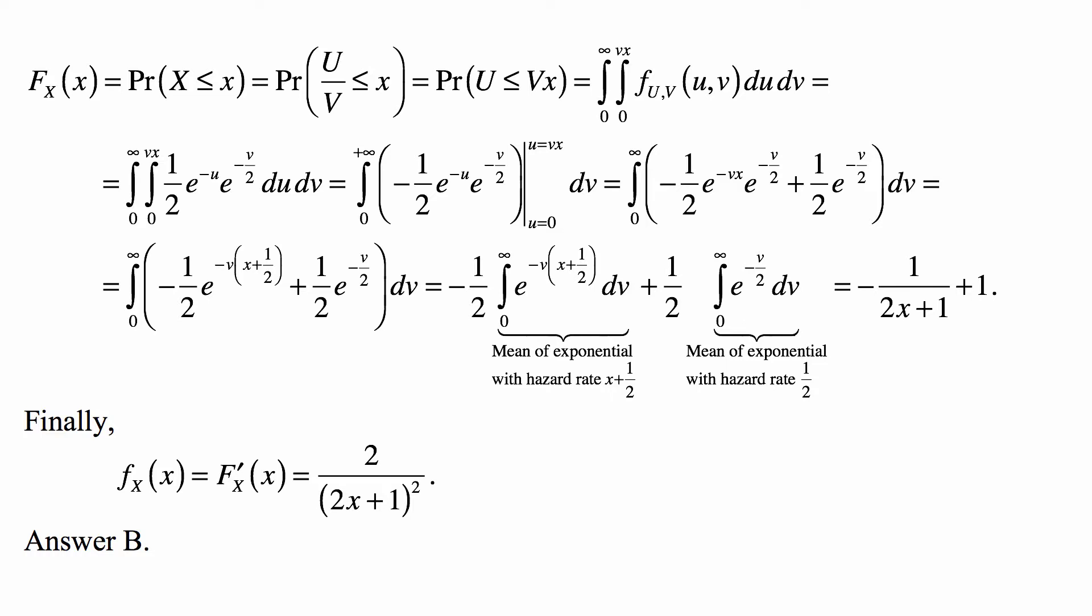We obtain now a function of v, with x as the parameter for which we're computing the probability that X ≤ x. This becomes the integral from 0 to infinity of -(1/2)e^{-vx}e^{-v/2} + (1/2)e^{-v/2} dv.